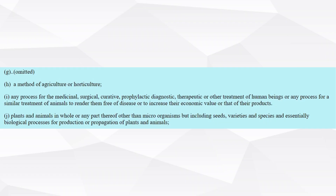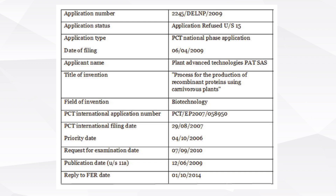Section 3G is omitted from the Indian Patents Act 1970. Coming to Section 3H, a method of agriculture or horticulture is a statutory exception. To understand this subsection better, we can look at patent application 2245 Del NP 2009, where the applicant claimed a carnivorous plant that can be used as a medium for the production of a protein. The applicant claimed a process in which the plant was genetically modified by transformation and the protein was expressed in the digestive secretion of the genetically modified plant. This patent application was refused on the grounds of Section 3J, as the cultivation, growing, and harvesting of fluid from the trap was considered a method of agriculture and hence not a patentable invention.